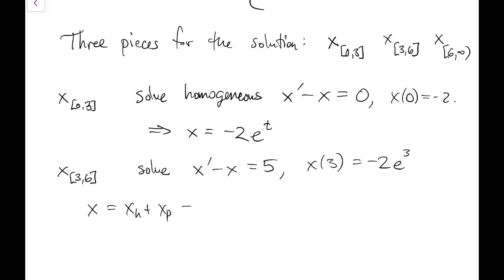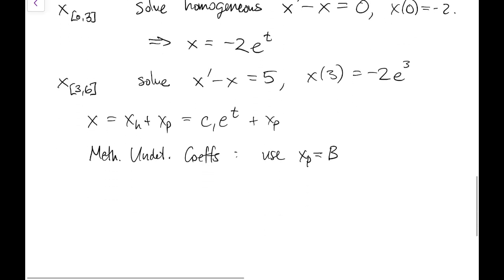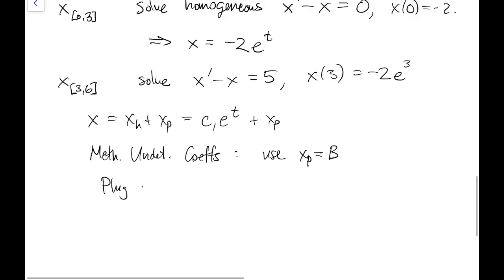This is a non-homogeneous problem, so we have to have the homogeneous part plus a particular part. To solve this particular part, it's very easy to use the method of undetermined coefficients. Since the forcing function here is just a constant, which is a polynomial of degree 0, then xp should also be a polynomial of degree 0. So we just have to find out what this coefficient b is, and we plug this xp into the original equation on this piece.